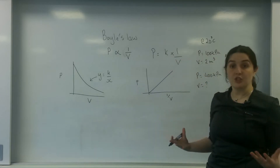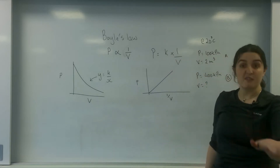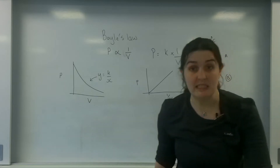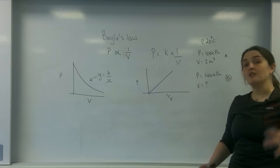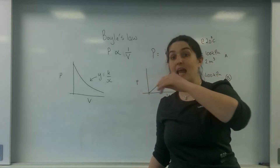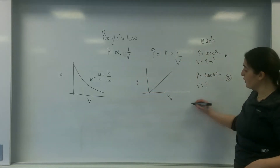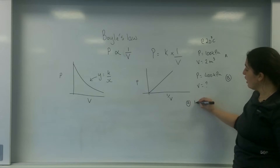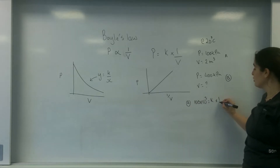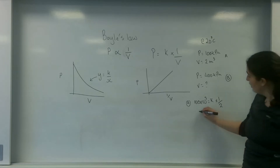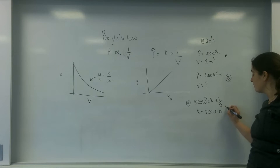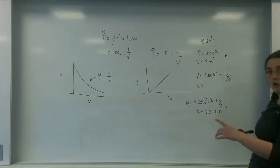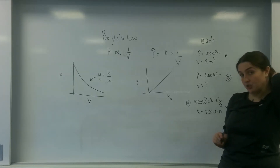I can use this relationship because the constant is going to be the same — the temperature hasn't changed. If I work out this constant, I know it is the same for now and for next. So let's work it out at point A: 100 times 10 to the 3 equals the constant times 1 over 2. So my constant is 200 times 10 to the 3.